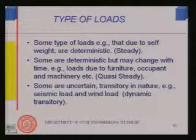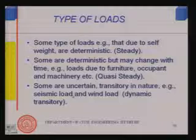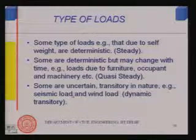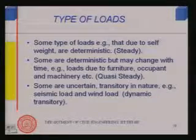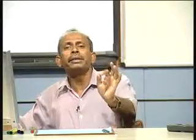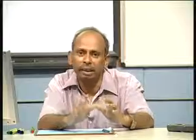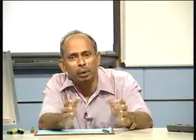Wind loads — especially gusts — also act for a very short period of time and are dynamic in nature, transitory and changing rapidly. Both wind and earthquake loads are uncertain: they may come once in 50 years or once in 100 years, or even twice in 50 years. So many factors control them, and a good number are even unknown today, particularly those related to earthquake.